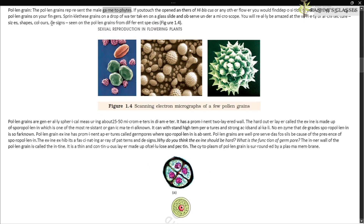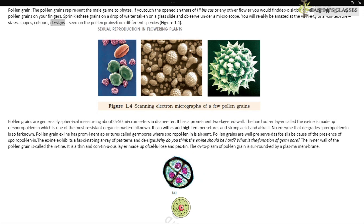Pollen grains represent the male gametophytes. If you rub opened anthers of hibiscus or any other flower, you would find deposition of yellowish powdery pollen grains on your fingers. Sprinkle these grains on a drop of water on a glass slide and observe under a microscope — you will be amazed at the variety of architecture, sizes, shapes, colors, and designs seen on pollen grains from different species (Figure 1.4). Pollen grains are generally spherical, measuring about 25–50 micrometers in diameter.